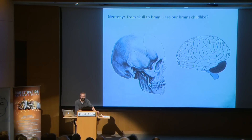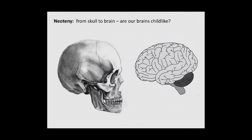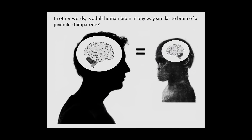But what is interesting for us is not really how it is in terms of the skull, but the content of the skull in terms of brain. We're interested: are human brains childlike? Or in other words, if we look at the adult human brain, is it in any way similar to the brain of the baby chimpanzee?